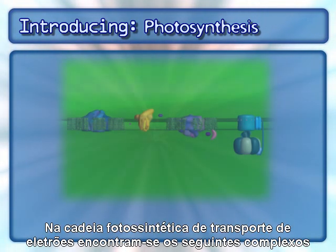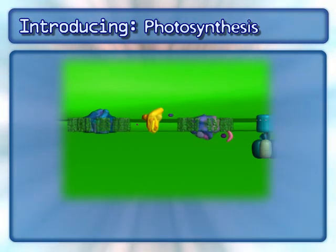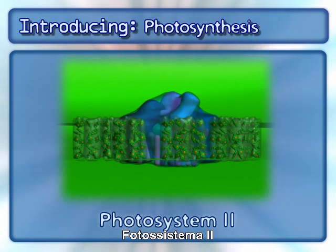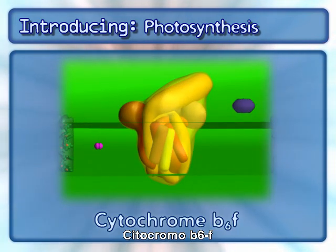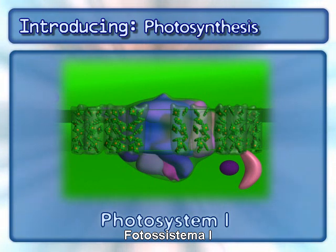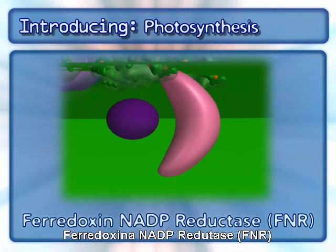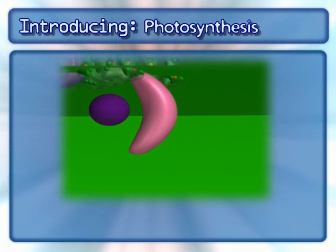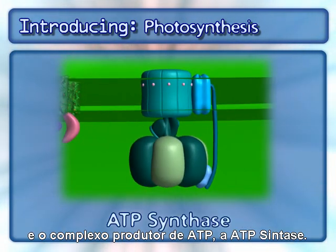The following complexes are found in the photosynthesis electron transport chain: Photosystem II, cytochrome B6F, Photosystem I, ferredoxin NADP reductase, and the complex that makes ATP — ATP synthase.